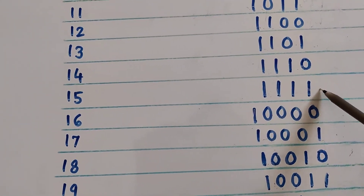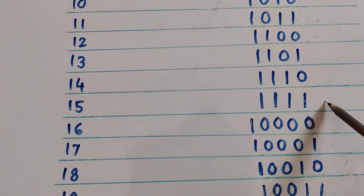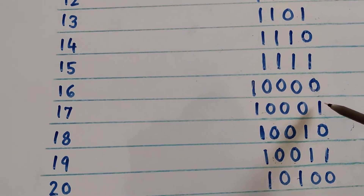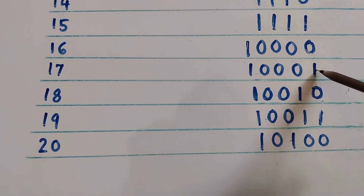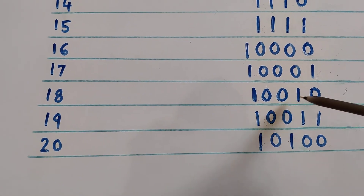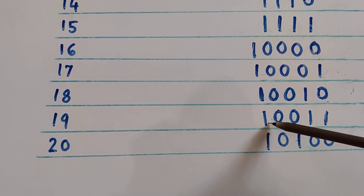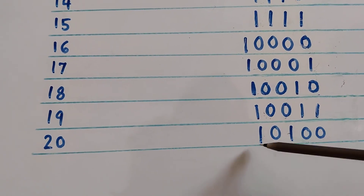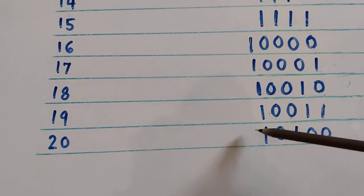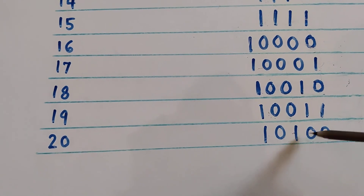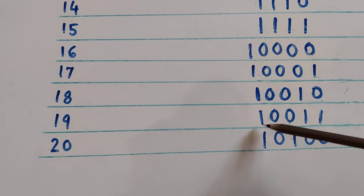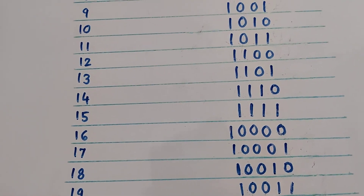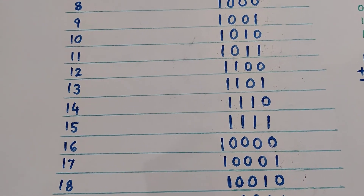Continuing in the same way, adding 1 each time, we can find binary values for decimal 16 onwards. Decimal 19 in binary is 10011 and decimal 20 in binary can be written as 10100. In this way, we can represent any decimal number in the binary number system.